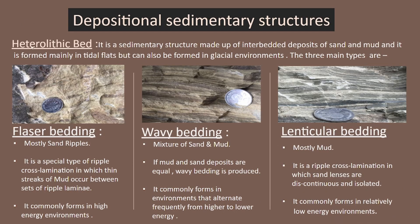The next depositional structure is heterolithic bedding. There are three types: flaser bedding, wavy bedding, and lenticular bedding. Heterolithic bedding is a sedimentary structure made up of interbedded deposits of sand and mud. Flaser bedding is sand-dominated, forming in a high energy environment. It is a special type of ripple cross lamination in which thin streaks of mud occur between the sets of ripple laminae.